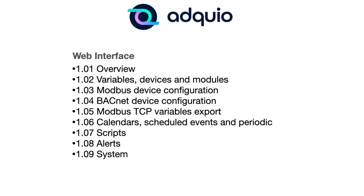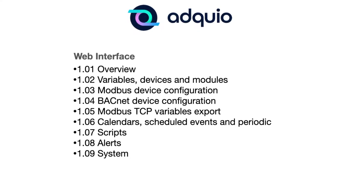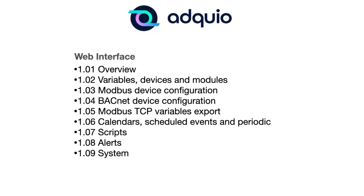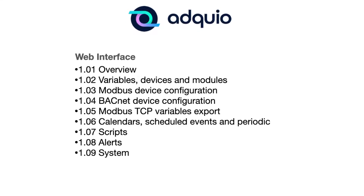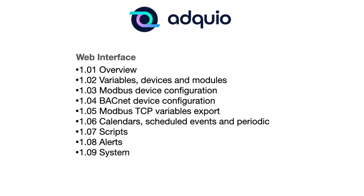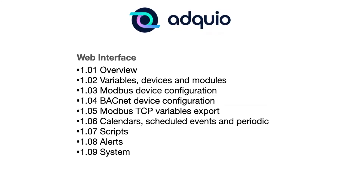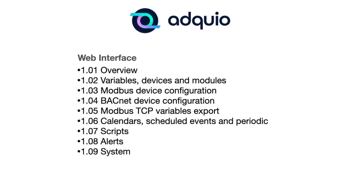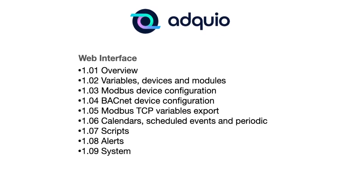Now let's move on to our first block, the Adkio web interface. In this block, we will talk about the general overview of the web interface. We'll go over the different variables, devices, and modules.